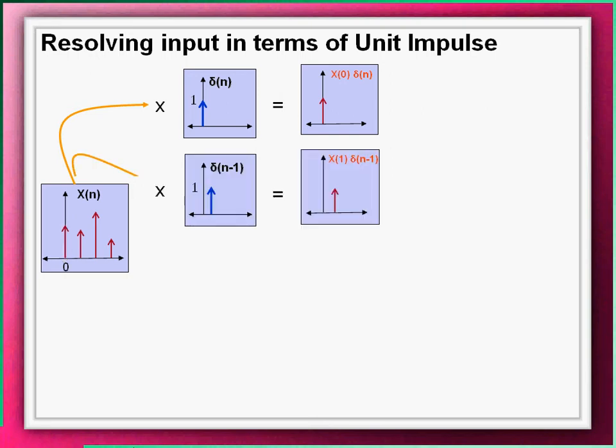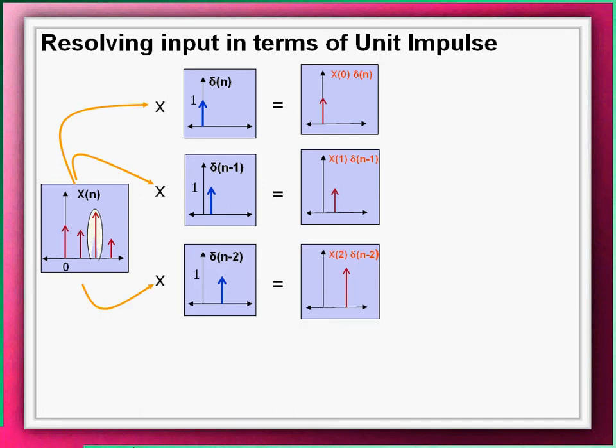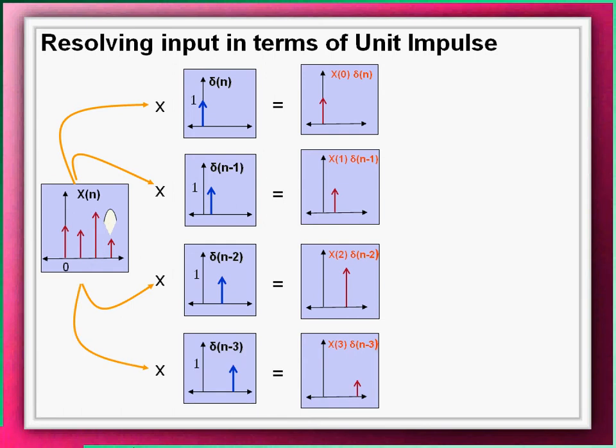In a similar way, multiplying X(n) with a shifted unit impulse delta(n-1) separates out the sample X(1). Proceeding the same manner, multiplying the input with a shifted unit impulse delta(n-2) separates out the next sample X(2), and finally we get a separate sample X(3).